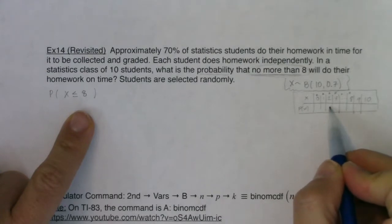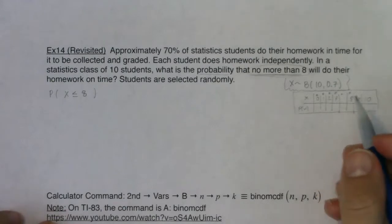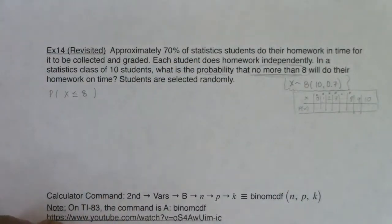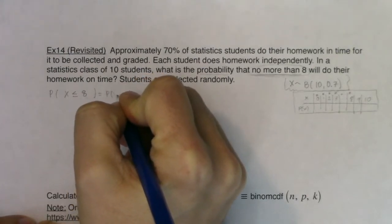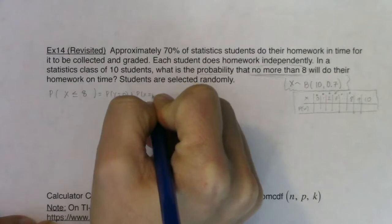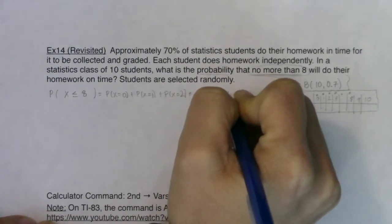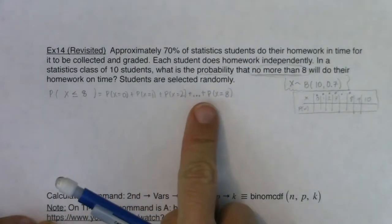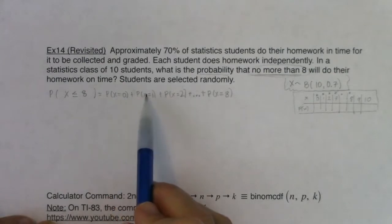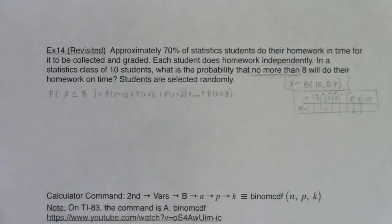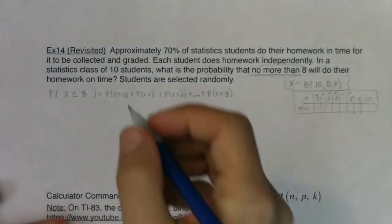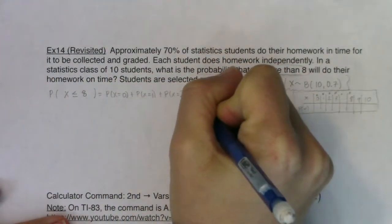To get any of these individual values I would use binomial PDF, which we covered in the previous example. So I could calculate this as the probability that X is zero, or one, or two, or three, four, five, six, all the way up to X equals eight — adding nine PDFs together. That's a completely reasonable way to do this. It'll take a little while on your calculator, but I'll call this Method 1: adding nine PDF calculations.